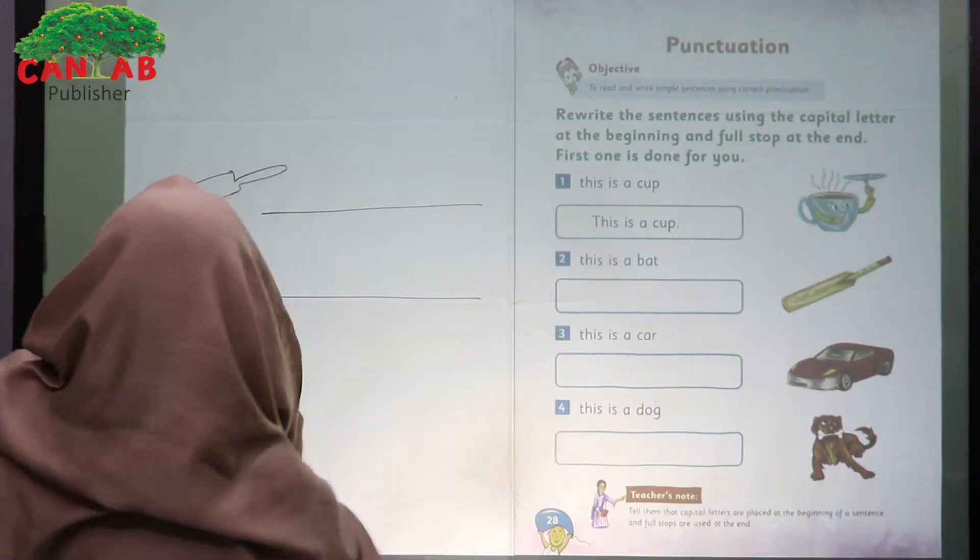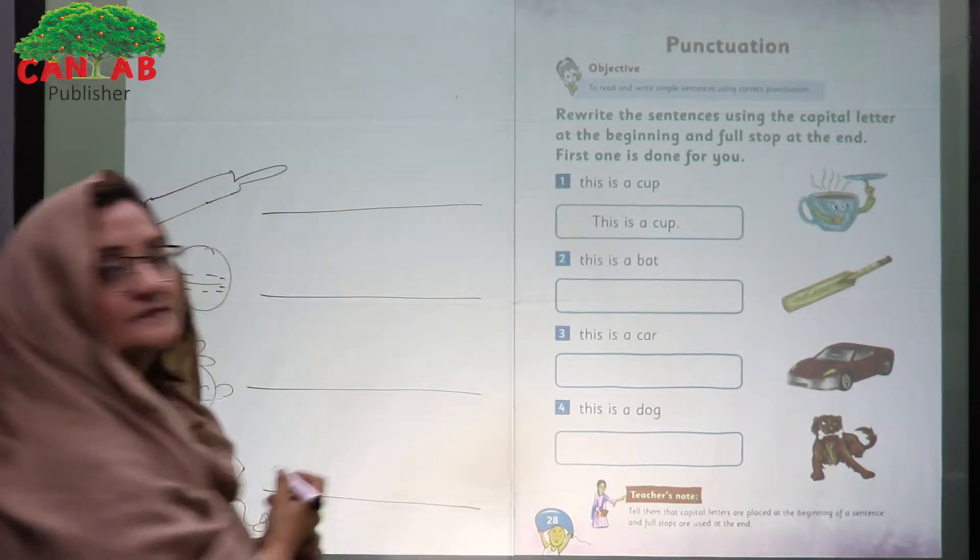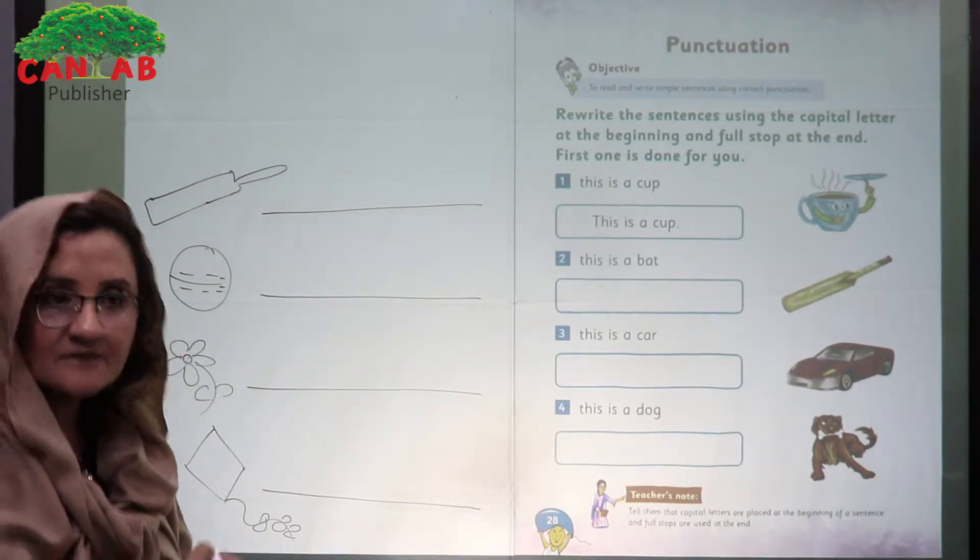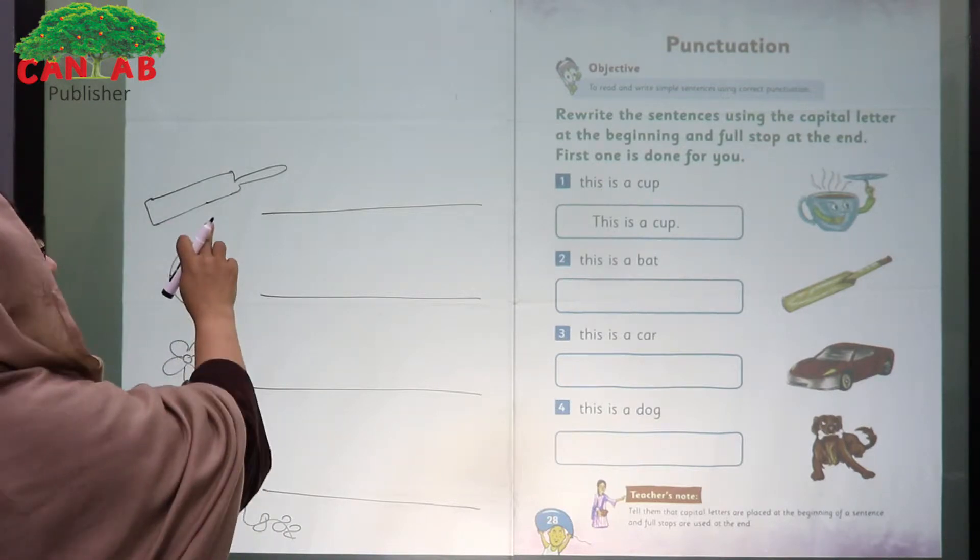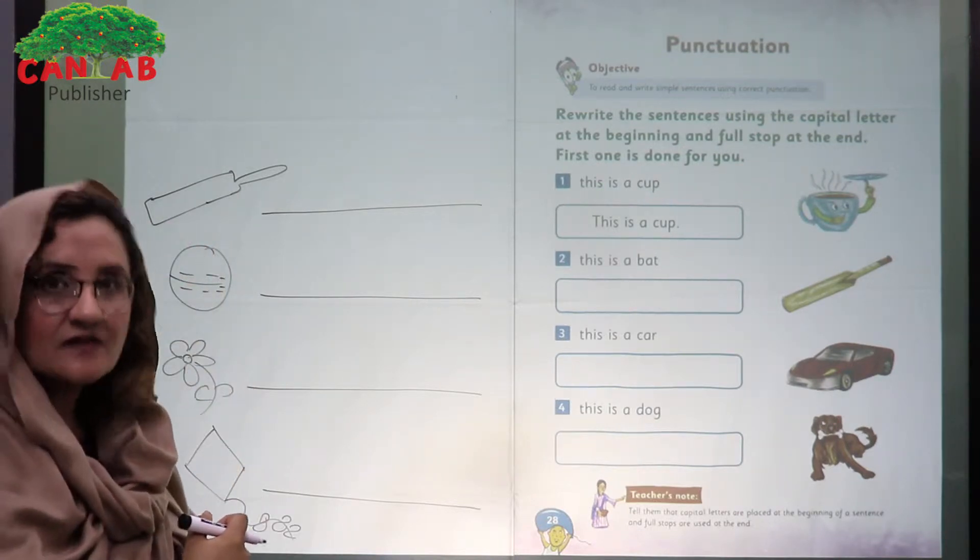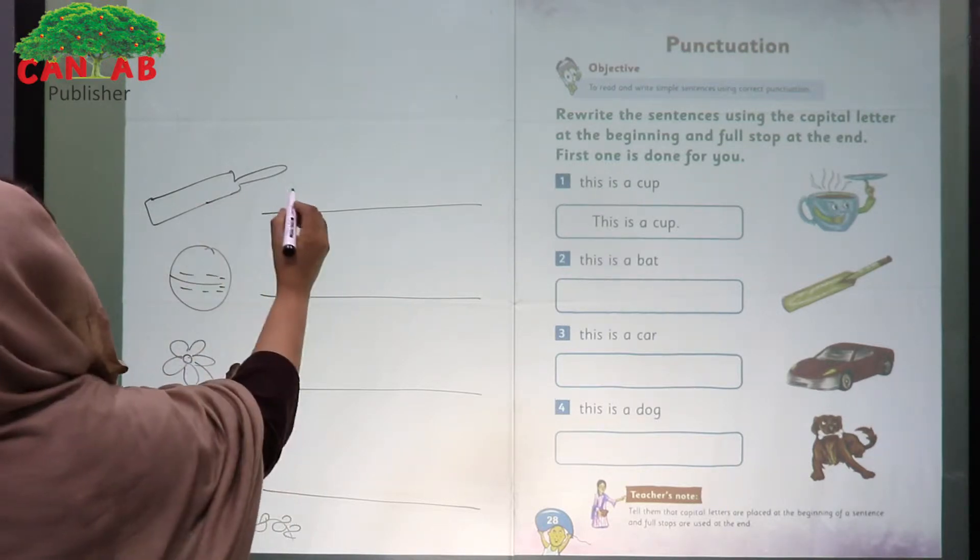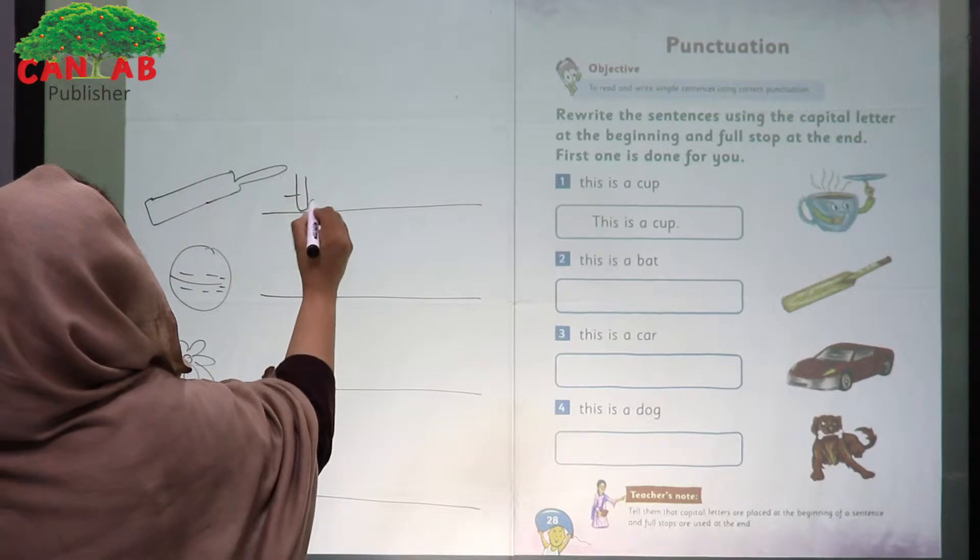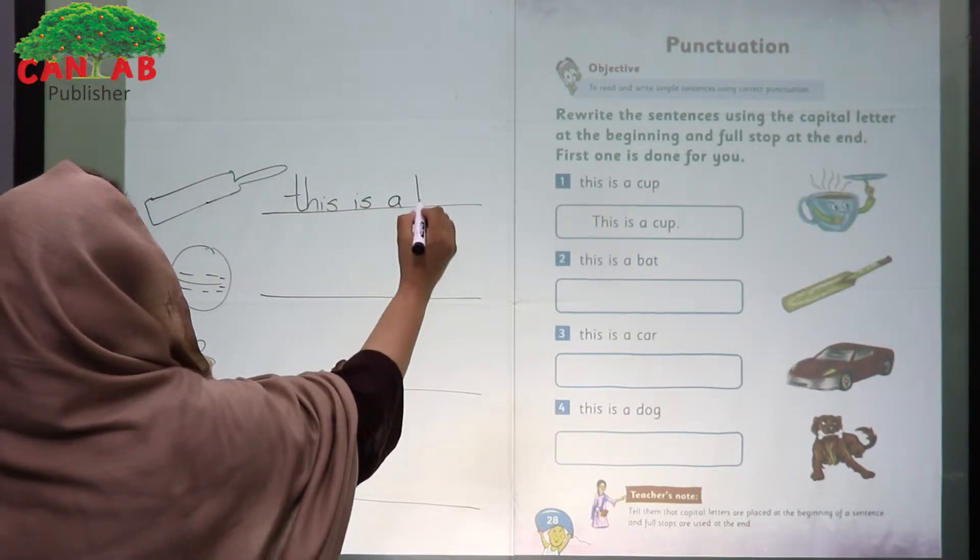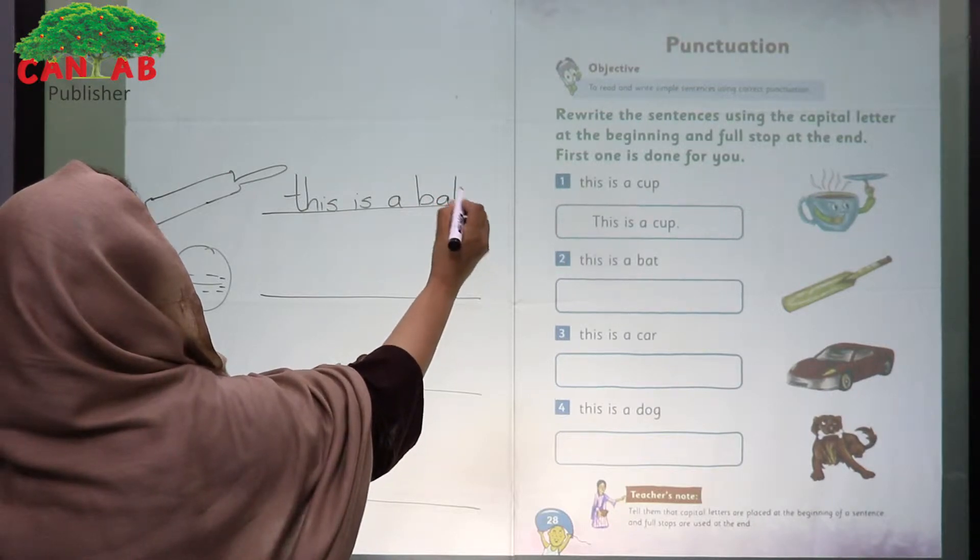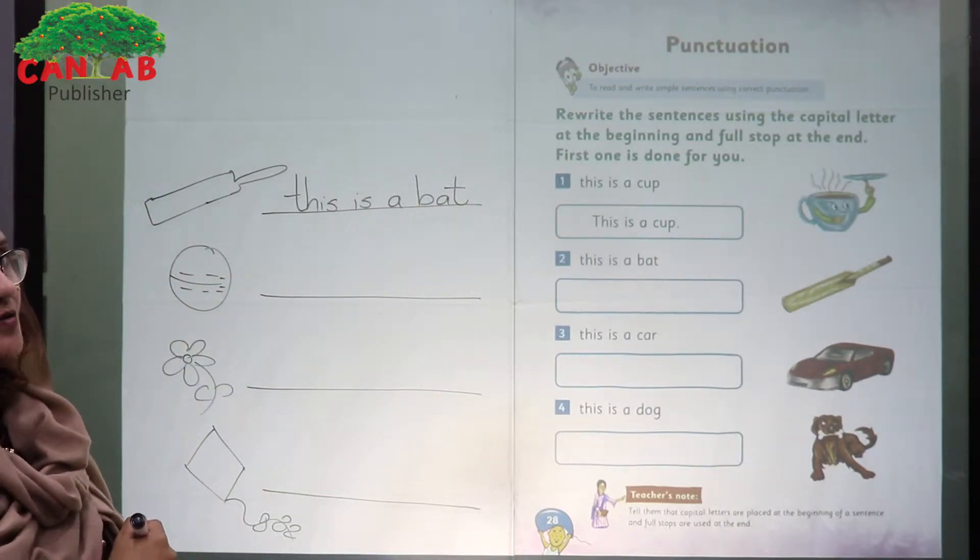Now I can invite students to come and write down a sentence. Can you please come and tell me what is this? This is a bat. May I write it for you? Look at here, this is a bat. But there is something wrong with this sentence.